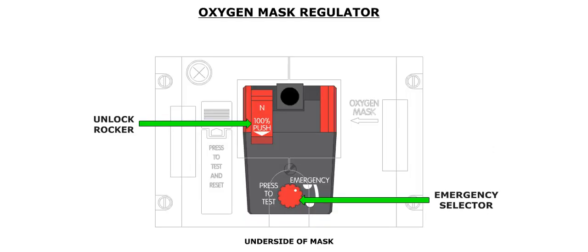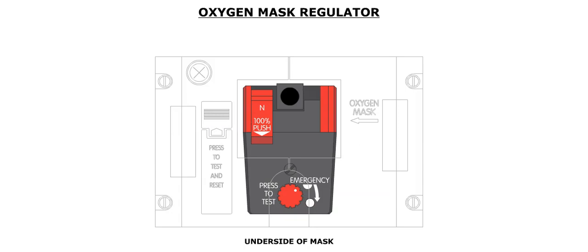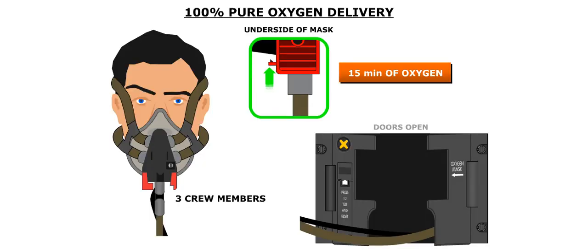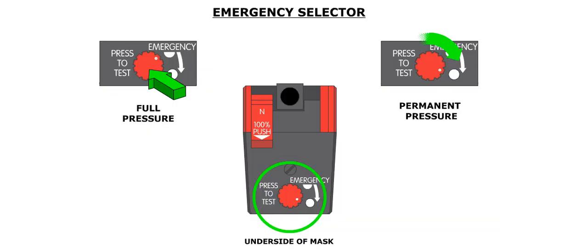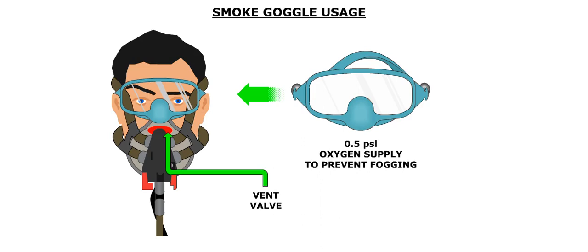The crew oxygen mask regulator consists of an emergency selector knob and an unlock rocker switch. The emergency selector knob controls the pressure of the oxygen delivered to the mask, and will function when the N/100% rocker switch is in the 100% position. The delivery pressure increases by rotating the knob in the direction of the arrow. When dilution control is set to 100%, pure oxygen will be delivered. Up to 15 minutes of oxygen can be delivered to all three crew members at demand flow. Pressing the emergency selector knob will supply oxygen at full pressure. When the smoke goggles are used, a 0.5 psi supply of oxygen can be delivered to positively pressurize the smoke goggles and purge any smoke that may have accumulated inside, which will also aid in preventing fogging.